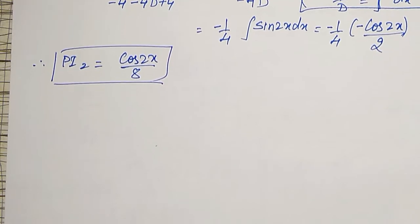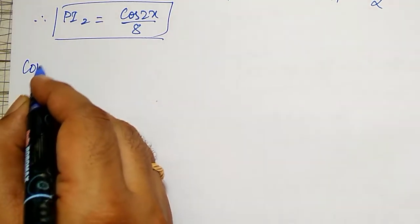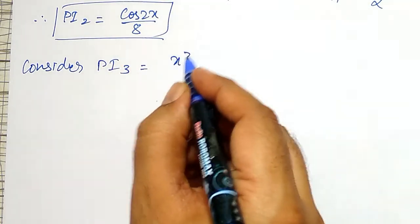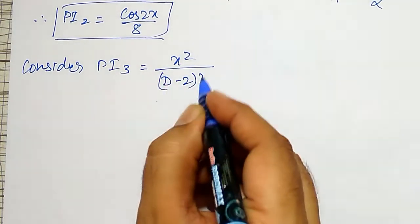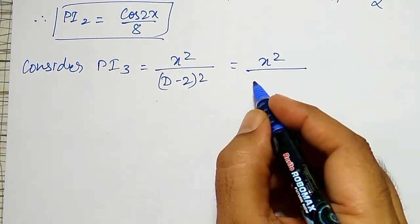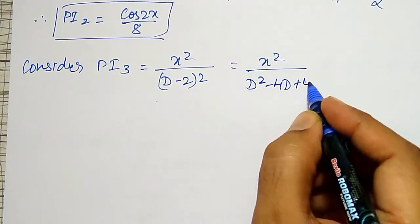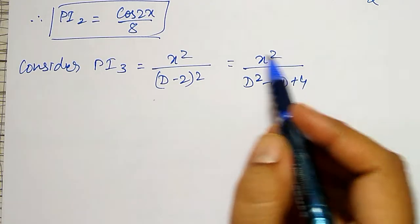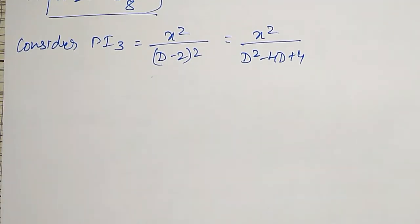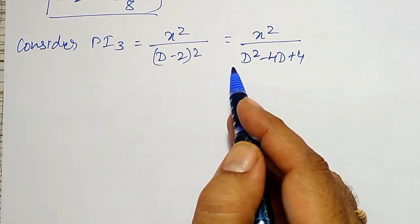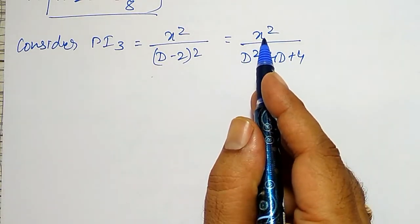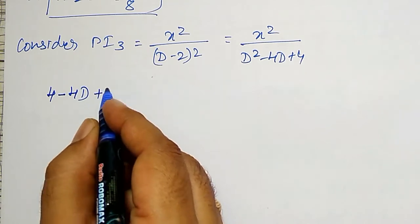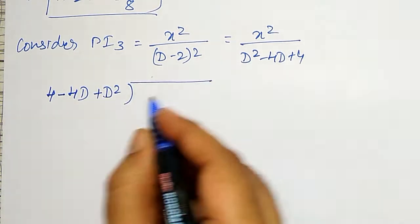Similarly, PI3 equal to x squared divided by (D minus 2) the whole square, which expands to x squared divided by (D squared minus 4D plus 4). As the numerator contains a polynomial, to find its PI I have to use the actual division method. The denominator must be written in ascending powers of D and numerator in descending powers of x. So it becomes: x squared divided by (4 minus 4D plus D squared).